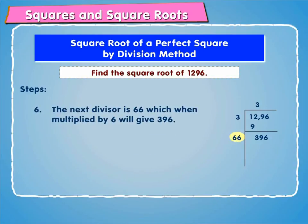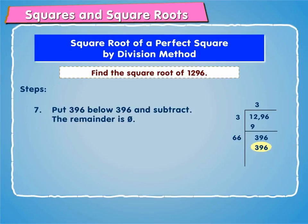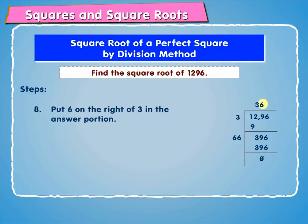The next divisor is 66, which when multiplied by 6 will give 396. Put 396 below 396 and subtract. The remainder is 0. Put 6 on the right of 3 in the answer portion.